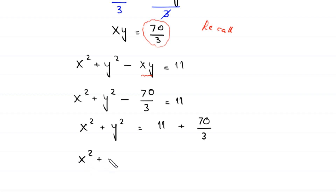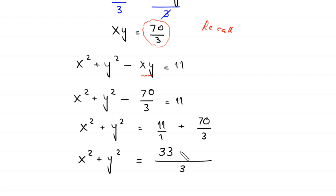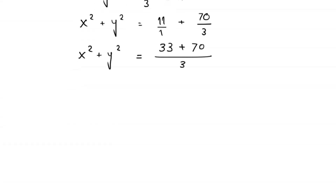So x squared plus y squared equals 11 plus 70 over 3. We take the LCM of 1 and 3, which is 3. So 3 divided by 1 is 3, and 3 times 11 gives 33; then 3 divided by 3 is 1, and 1 times 70 gives 70. Therefore x squared plus y squared equals 33 plus 70, which is 103 over 3.